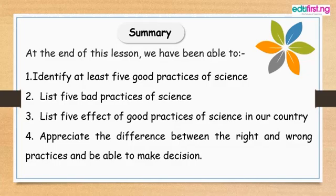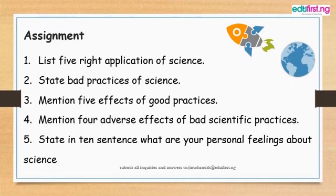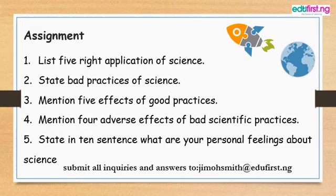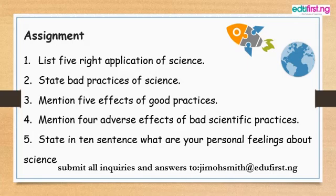I hope you've been able to learn one or two things. At the end of this class, you've been able to learn the good practices of science, the bad practices of science, the effect of good practices of science, and appreciate the difference between the right and the wrong practices, and also be able to make your decisions based on those practices. Whatever you do, whatever your course, whatever your motive, ensure that it is for the good advancement of the human race.